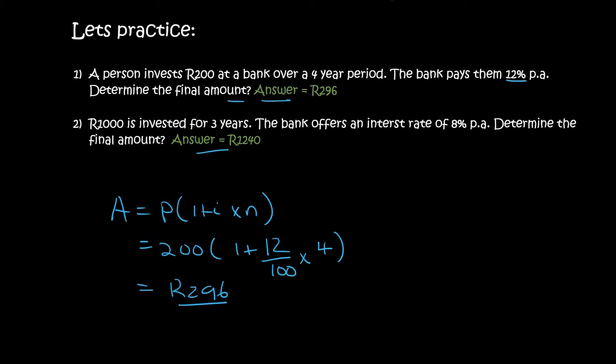How much interest did the bank actually give them? Well, that would be 296 minus 200. And so, the bank actually gave them 96 Rand. That's just for extra information. The actual answer is this one.